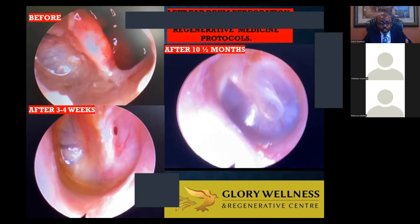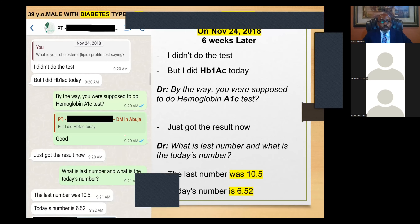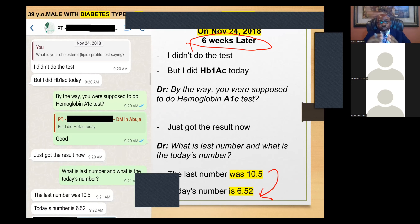Stem cell therapy and exosomes prevent scarring — for example, someone with a keloid who has surgery can have exosomes injected after surgery, and 10 months later the skin is crystal clear as if nothing happened. For diabetic patients, within six weeks of exosome treatment the hemoglobin A1c dropped from 10.5% to 6.52% in less than two months — and note that the patient was only diagnosed four months before the treatment.